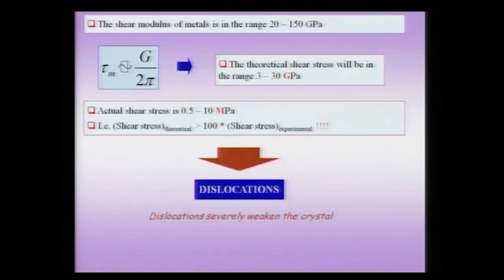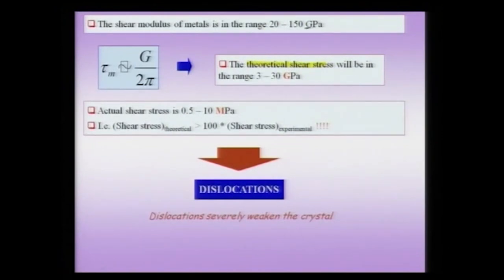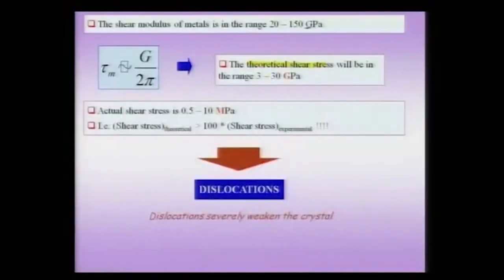The shear modulus of metals is typically on the order of 20 to 150 gigapascals — that is, of the order of 10⁹ pascals. Given that tau_m ≈ G/2π, this theoretical shear stress would be in the range of 3 to 30 gigapascals. This is called the theoretical shear stress because it is the stress theoretically required to cause plastic deformation by shear in a perfect crystal — in the absence of any kind of defect.